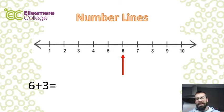Then we're just going to count on the threes that we're adding. So we'll go from six, count one, two, three and we should arrive at our answer which is nine.